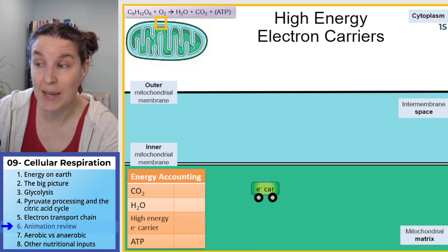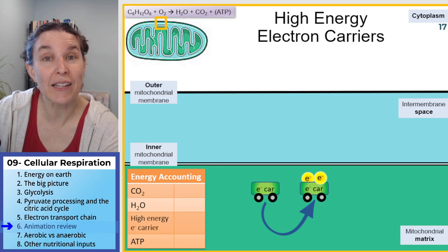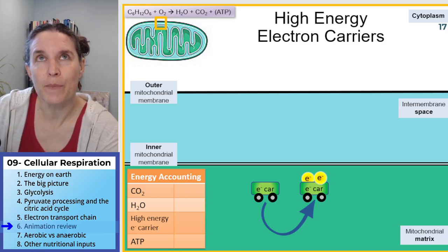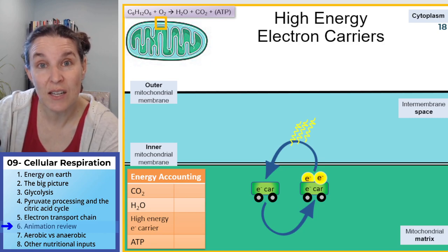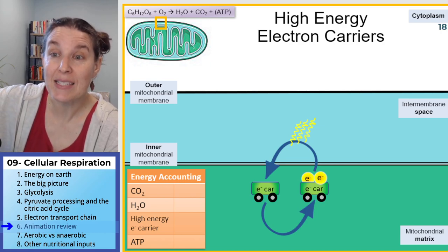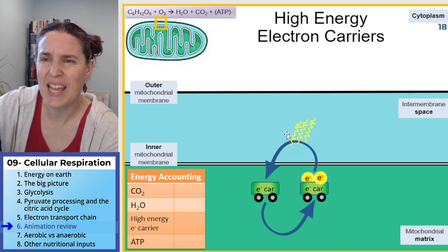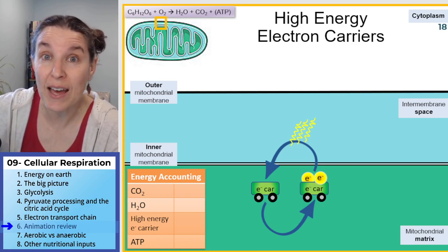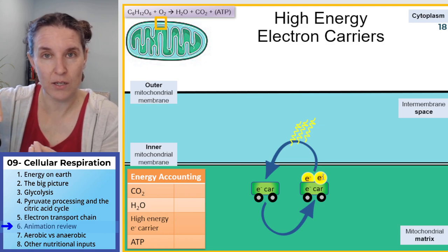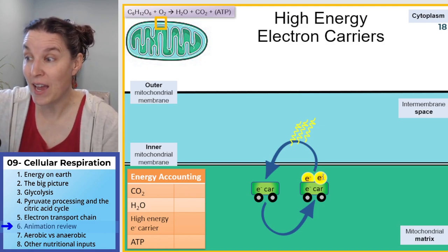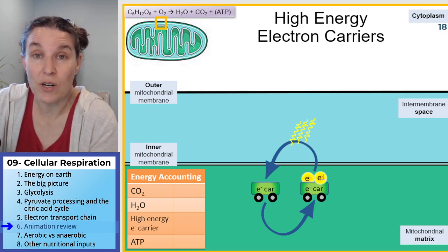Here's an electron carrier that's empty — I made it look like a little car. It can carry two high-energy electrons. Anytime the high-energy electron carrier gets rid of its electrons, the energy is going to be released — it passes the electrons somewhere and energy is released, illustrated as squiggly lines. We can capture that energy and use it to do work. If those electrons get put back on the electron car, we refill it, and the electron carrier is recycled to participate in the process again.